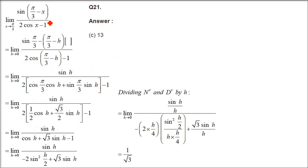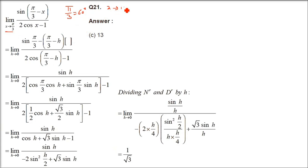This is question number 21: sin(π/3 minus x) divided by (2 cos x minus 1), with x tending to π/3. Two things we need to know: the values of sin and cos at π/3 (60 degrees), and the cos(a minus b) formula which we already discussed earlier. I am applying the left-hand limit. Why? It totally depends on the question — if we apply π/3 plus h we have to do one more step, but if we take π/3 minus h, things will be solved quite easily.